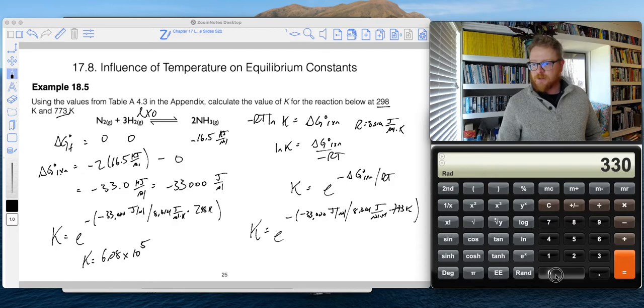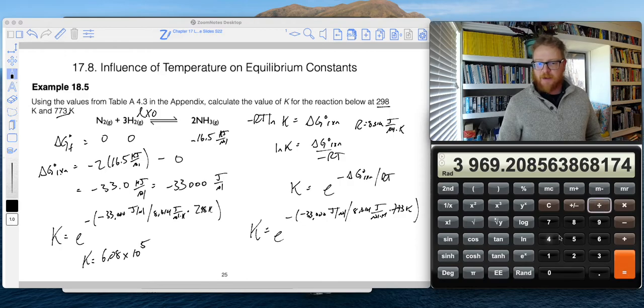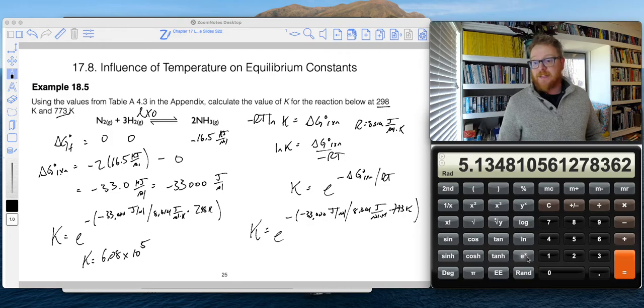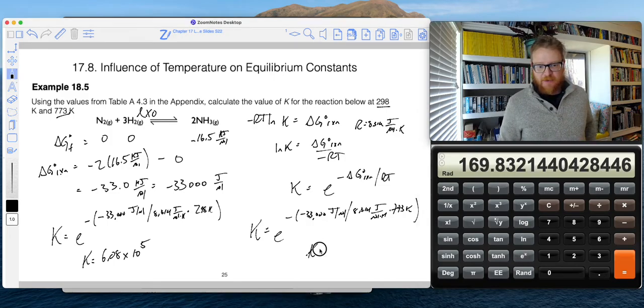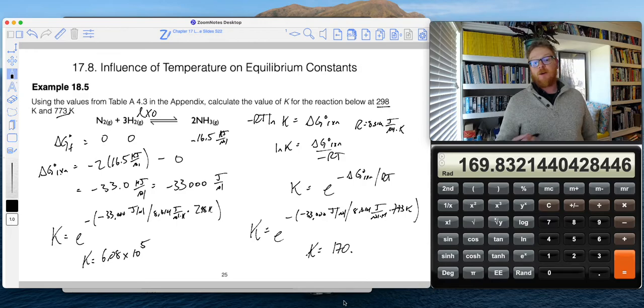So now let's see what I get for this K at 773 Kelvin. So it's going to be 33,000 divided by 8.314, and then now divided by 773. And now I take the exponential of that, and for this K, with three sig figs, I'm going to call that 170.